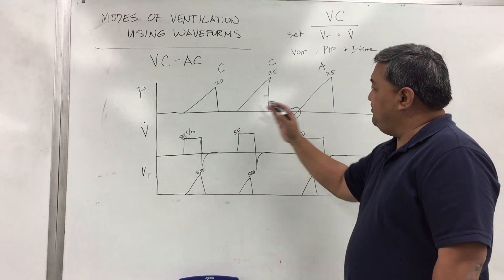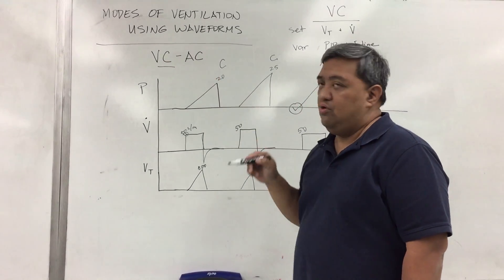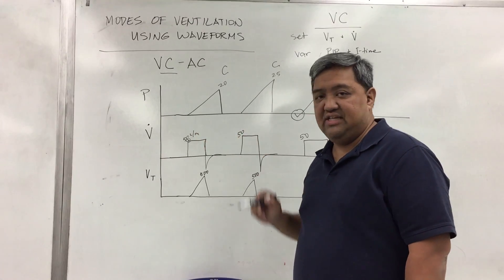Any combination of these two is your assist control mode. It is volume control because you have a set volume and a set flow.